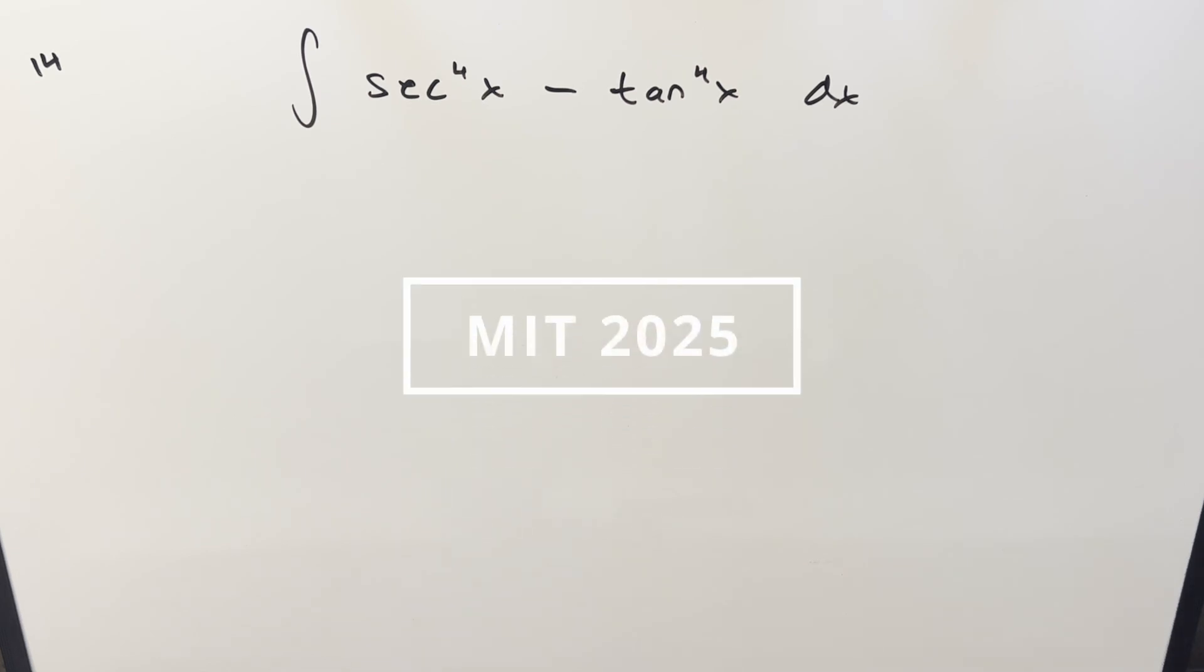Okay, we have another integral from the MIT integration B 2025, number 14. We have the integral of secant to the fourth x minus tan to the fourth x dx.